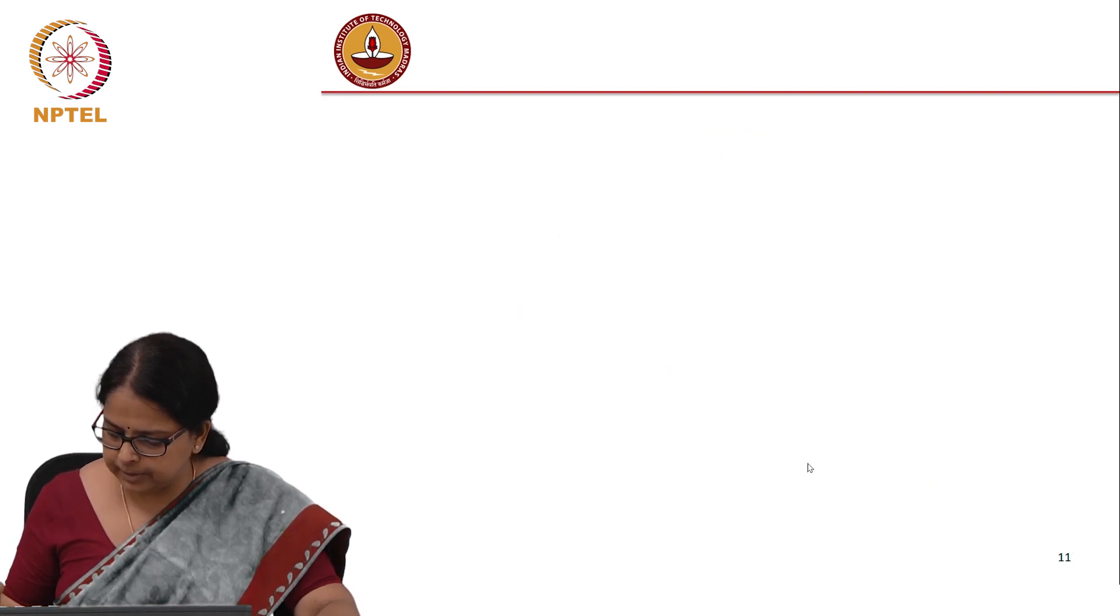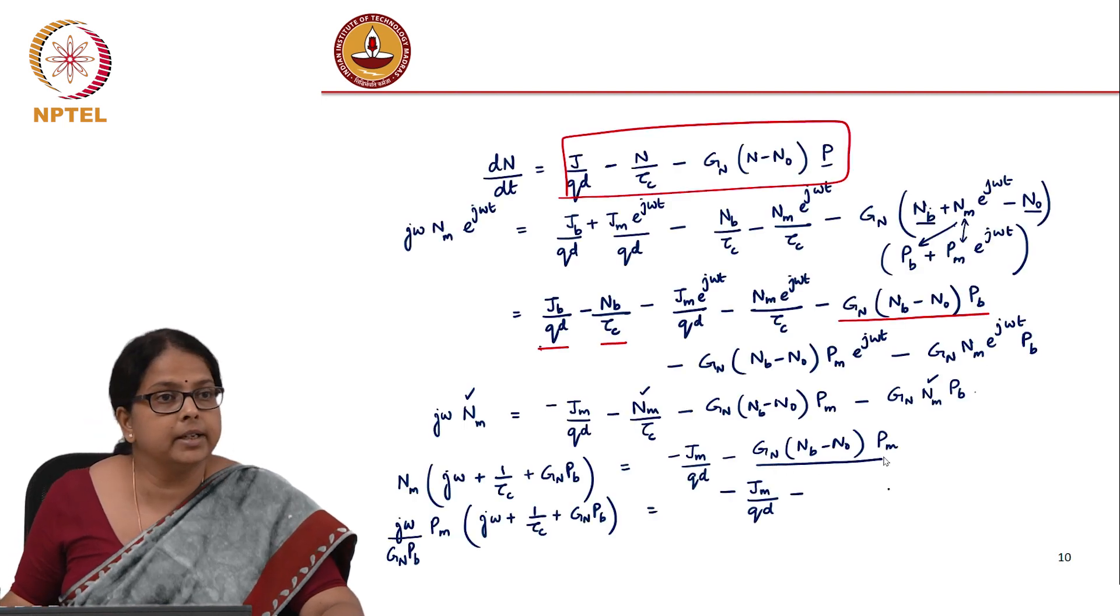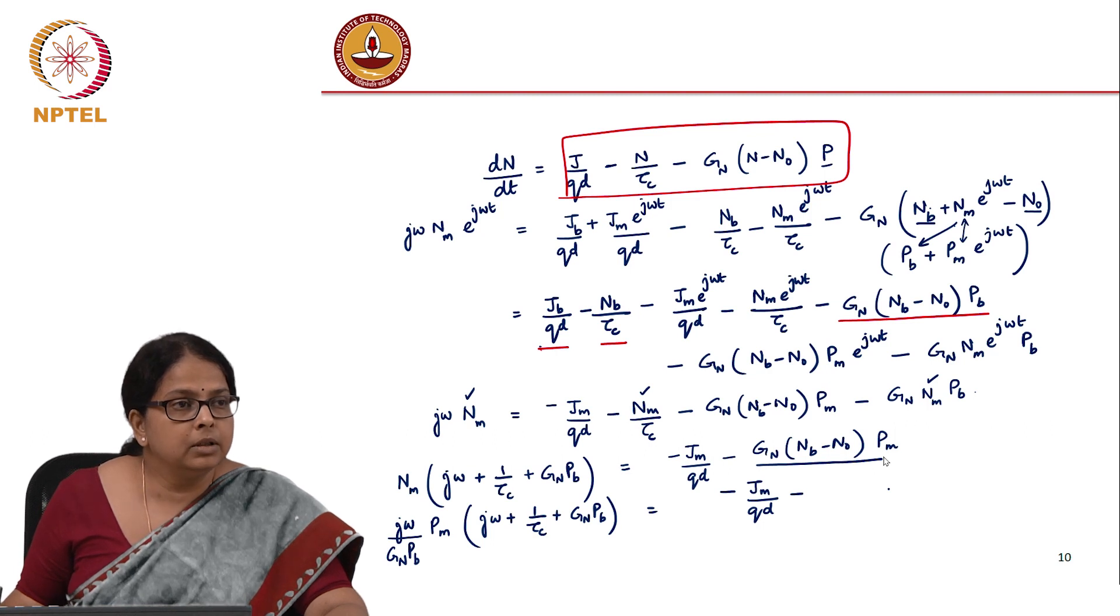By the way, what is this term? You can simplify it and write it as g_n times (n_b - n_0) must be equal to 1/tau_p.